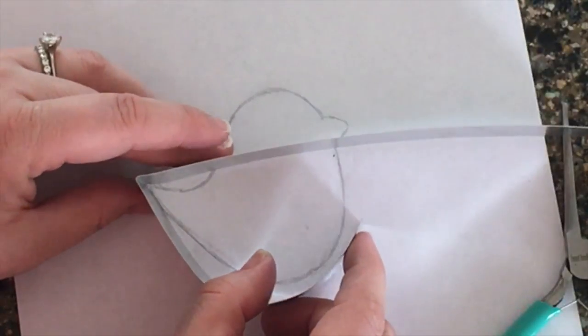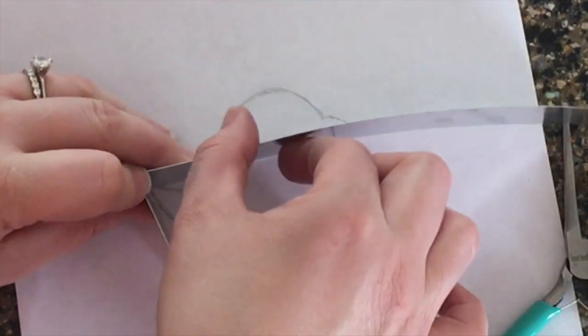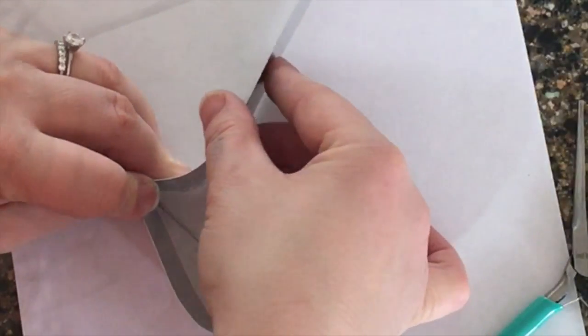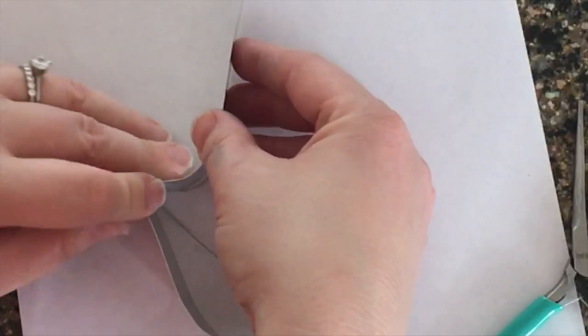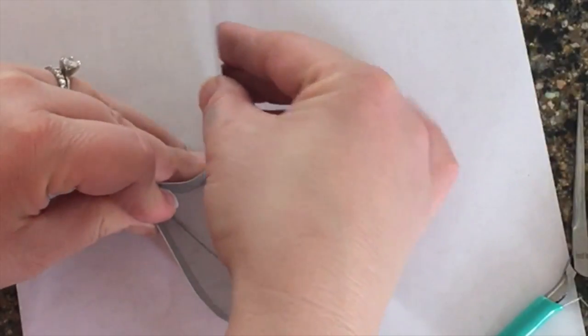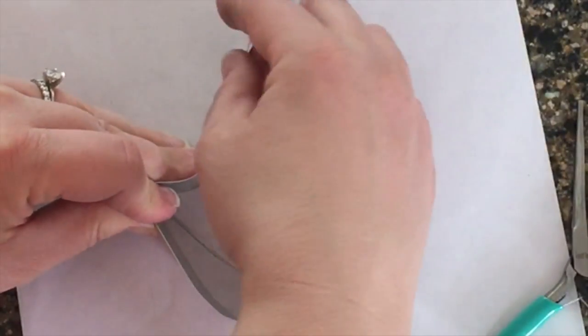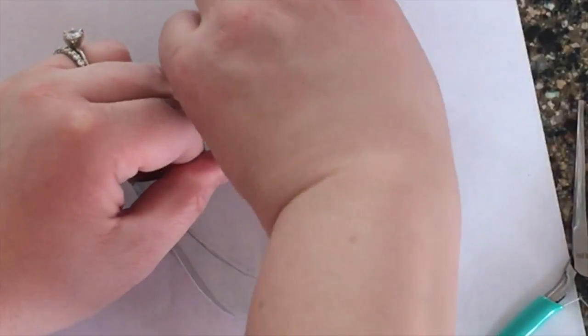Measure your cutter against your template again and start curving the strip up the bird's back. Continue on until you finish its head.